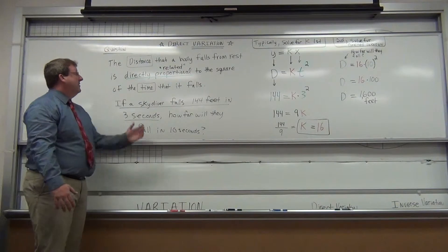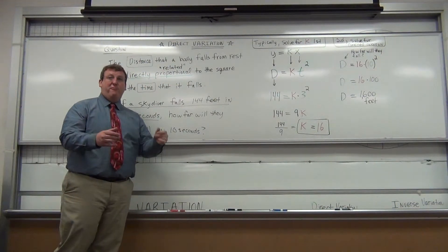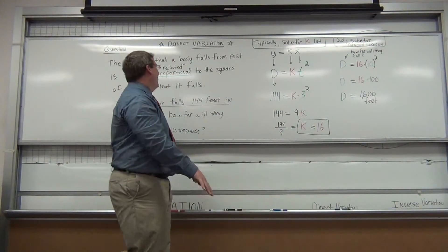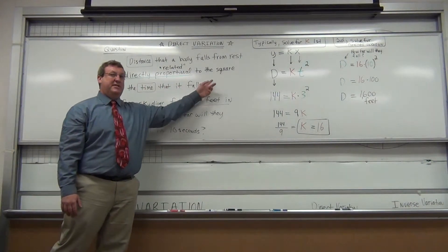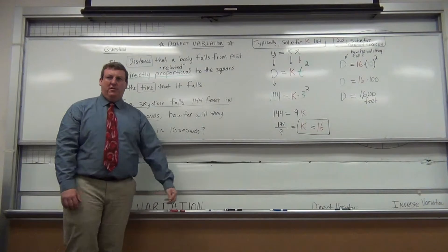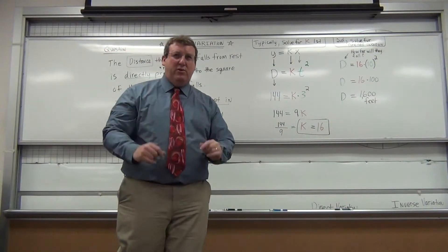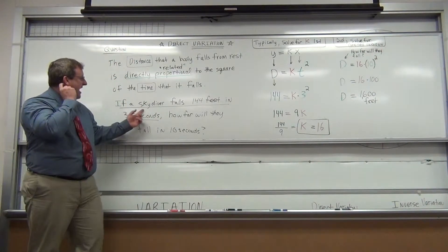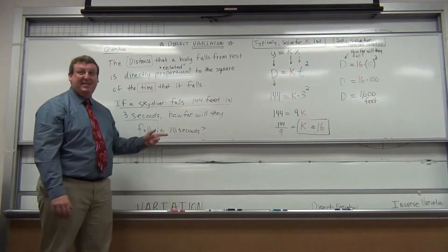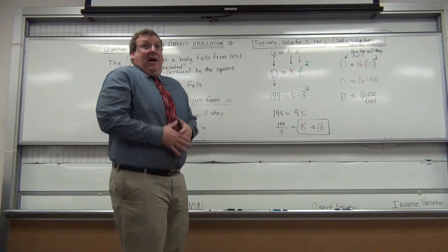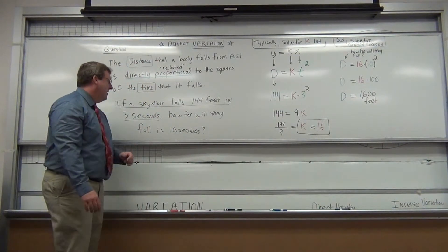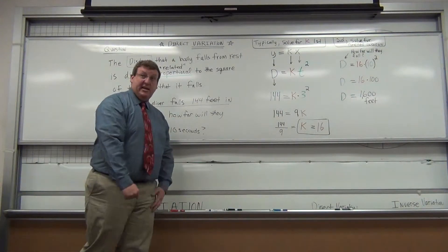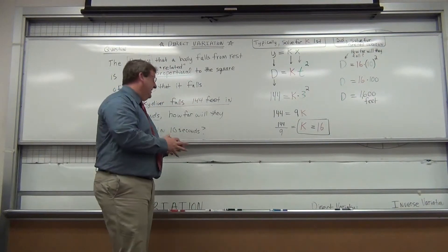Here's our question. The distance that a body falls from rest is directly proportional to the square of the time that it falls. Imagine you're a skydiver in a plane and they push you out the door. You're at rest and you start going fast. I hope right now you're trying to figure out: what's my input? What's my output? If a skydiver falls 144 feet in three seconds, how far is the same skydiver going to fall in ten seconds?